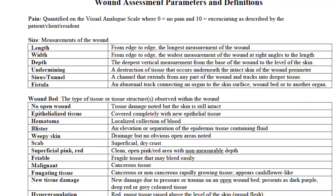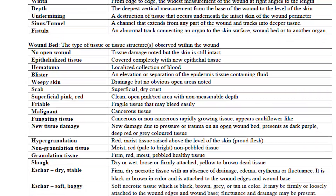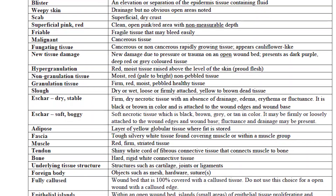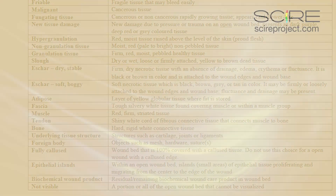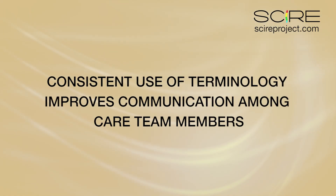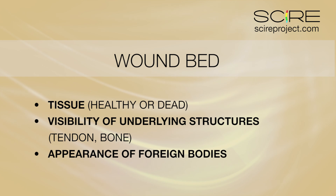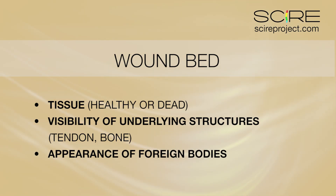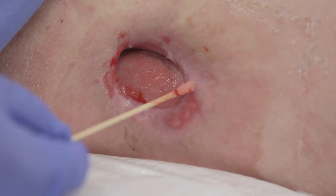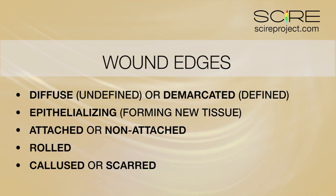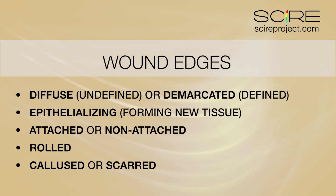Numerous parameters should be recorded to describe the wound in an objective manner. Note that terminology may vary in different locations and practice settings, but the principles are the same. Consistent use of terminology improves communication among clinical practitioners. The wound bed should be examined and characteristics of the tissue described — record if the tissue is healthy or dead. Underlying structures such as tendon or bone, and any foreign bodies visible, should also be recorded. The edge of the wound should be described as it can indicate the stage of healing. Pressure wounds can be described as having diffuse, demarcated, epithelializing, attached, non-attached, rolled, calloused, or scarred edges.